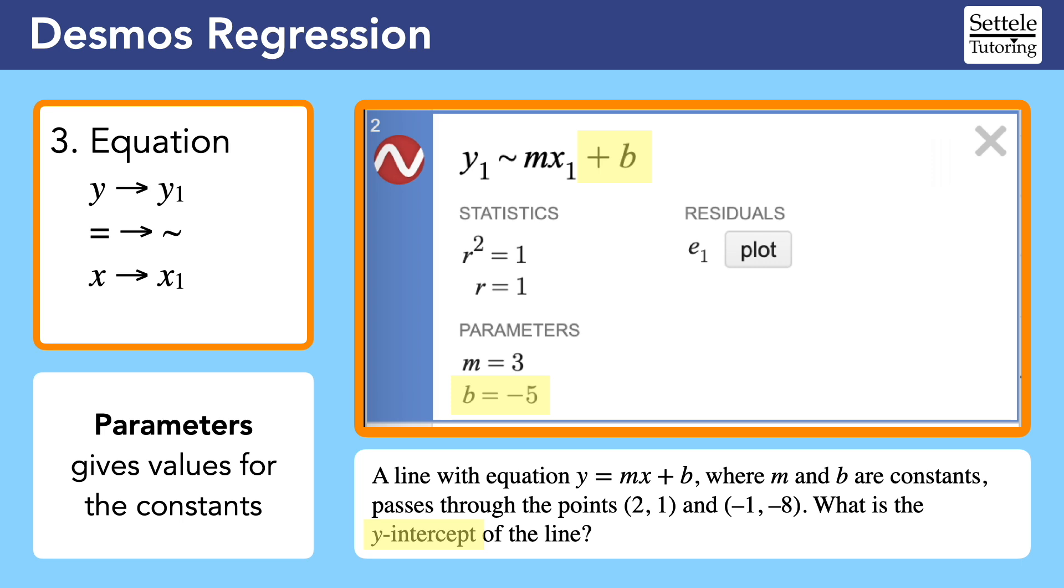Sometimes we need the entire equation, which we also have. Just plug the parameters into the correct spots in the original equation. In this case, the full equation of the line that passes through the points (2, 1) and (-1, -8) is y equals 3x minus 5.